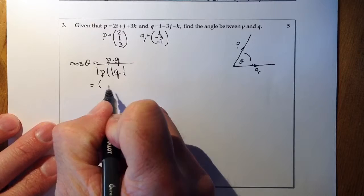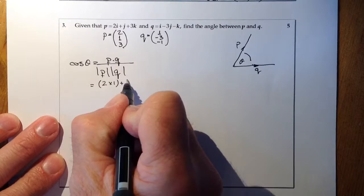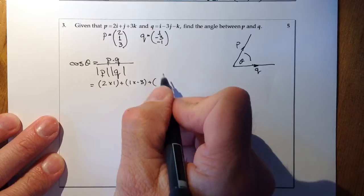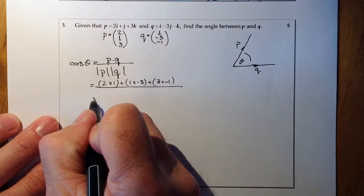So here we've got on the numerator, it will be 2 times 1, plus 1 times minus 3, plus 3 times minus 1. So that there on the top is the scalar product.